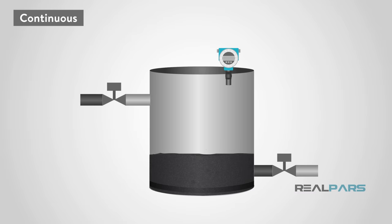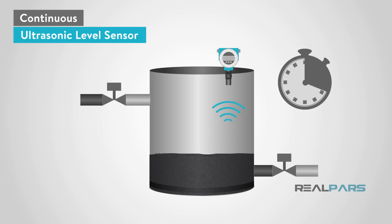Now, let's talk about continuous level measurement sensors. We will start with ultrasonic sensors. They work by emitting and receiving ultrasonic waves. The time it takes for the waves to reflect back is how distance is measured.